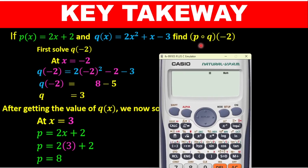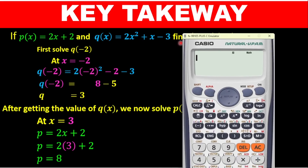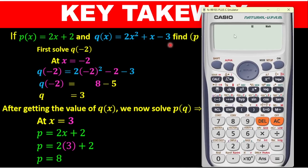First and foremost, always remember that the function closest to the number is what we enter first. Here we have p of k of -2, meaning k is closer to -2 than p, so we enter the k function first. Instead of writing k(x), we use y — so we set y equal to this expression. Let me bring up the calculator. Press Alpha then Y to get y.